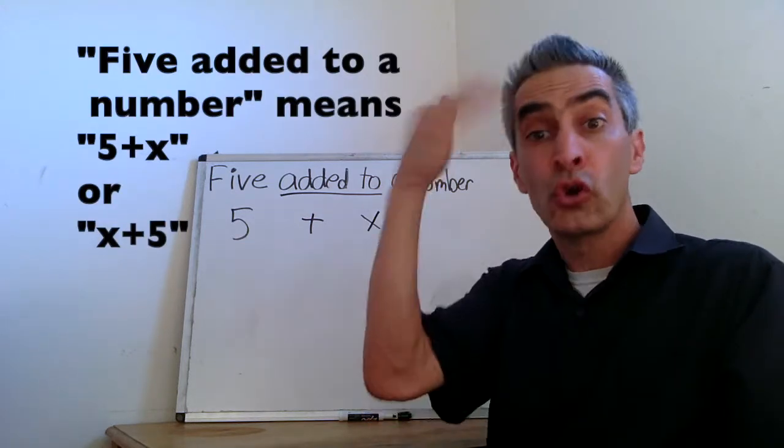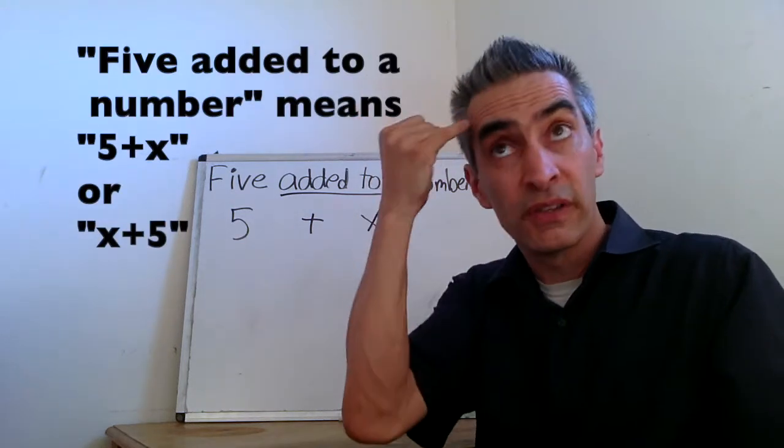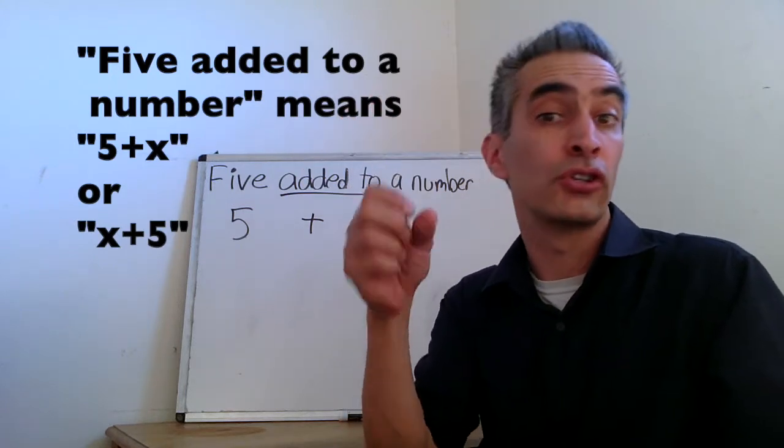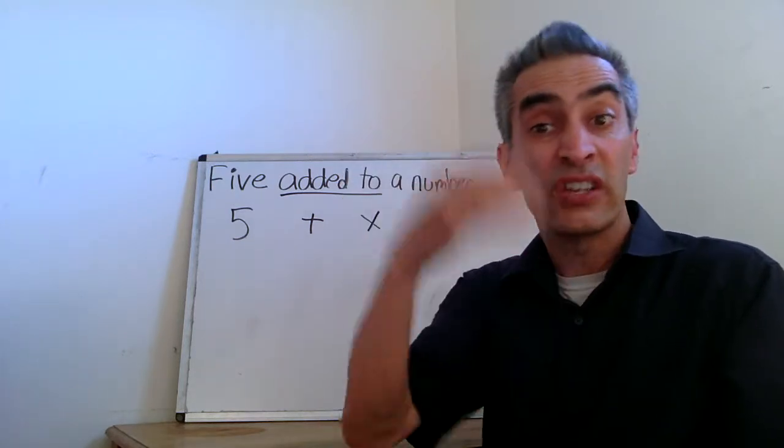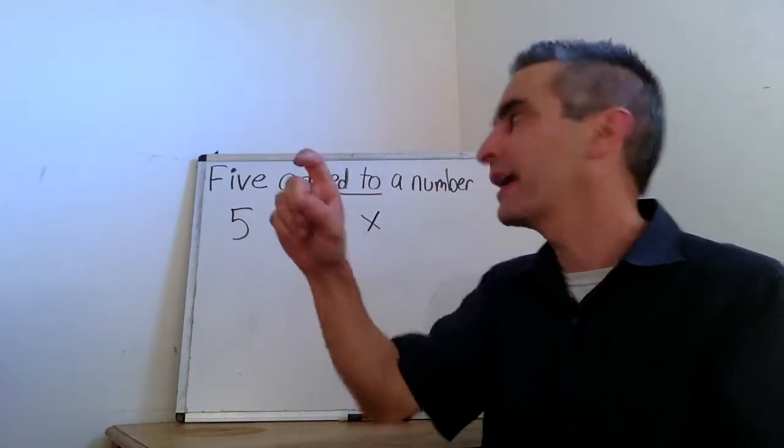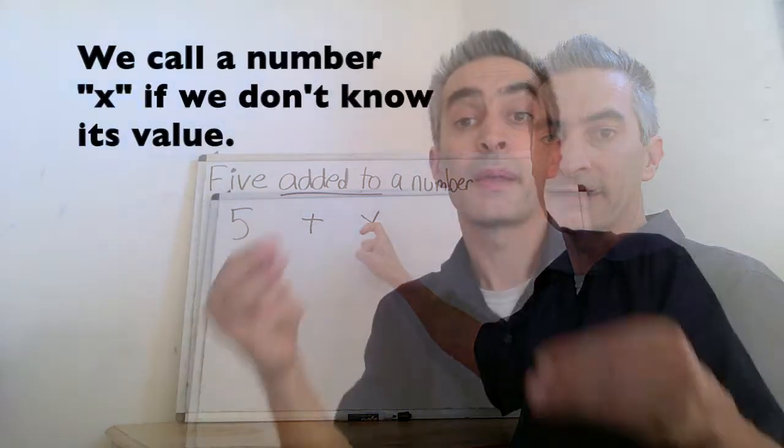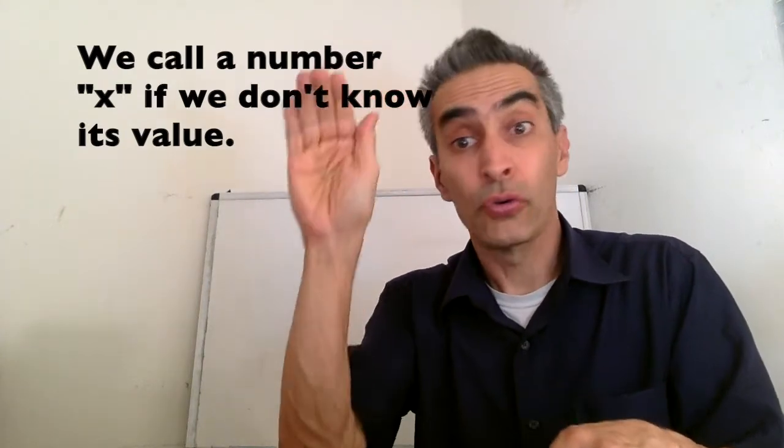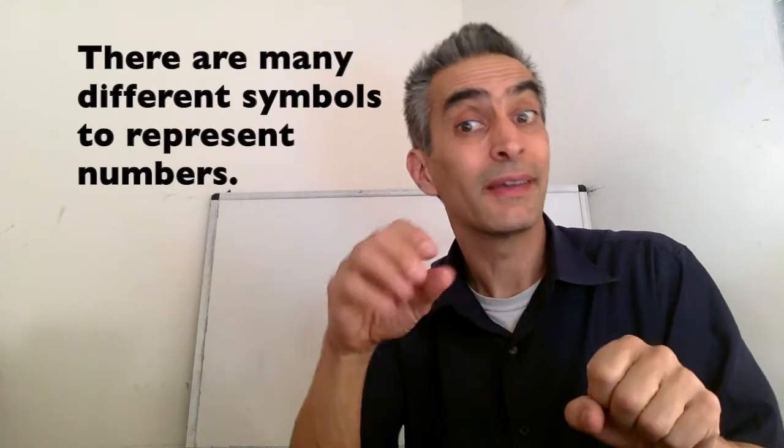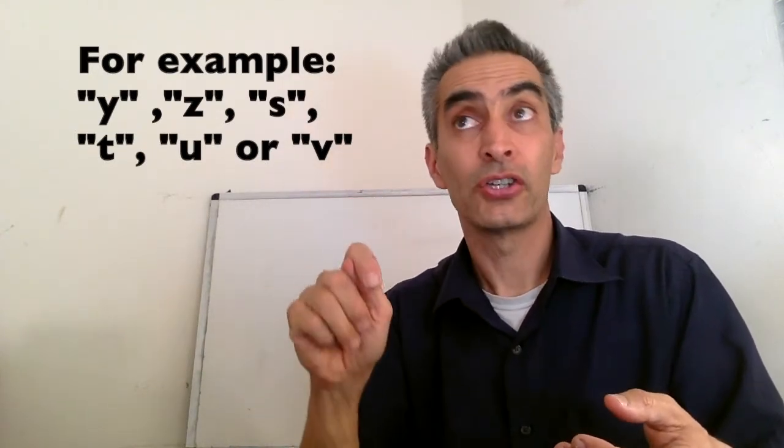This x is something that we really don't know its value. We don't know if it's a 5, a 10, a 2, 100, 1 half. We just don't know. Now, if we don't know the value of a number, we call it x. Math books and math teachers tend to use x if they don't know the value of a number. But you can see other symbols. For example, you might see y or z, maybe see s or t, u or v. There's many different symbols that you can use if you don't know the value of a number.